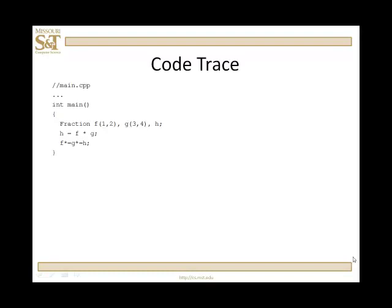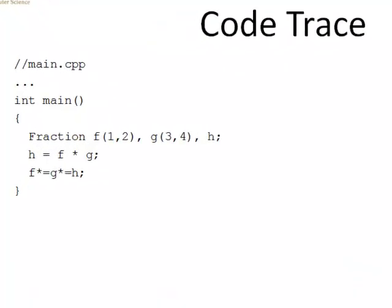We're going to go through a code trace. Here in main, we've declared three fractions. f I want to initialize to a half, g I want to initialize to three quarters, and h I want to be a default fraction. Let's see what functions are called and how the parameters are assigned the arguments or the operands that are sent.